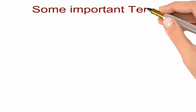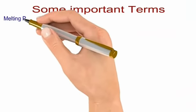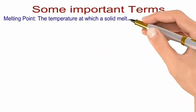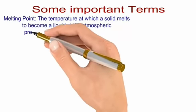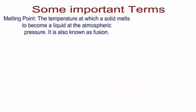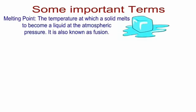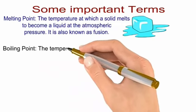Now we will look at some important terms. First of all we will look at melting point. Melting point is associated with solid. The temperature at which a solid melts to become a liquid at the atmospheric pressure is called melting point. It is also known as fusion.